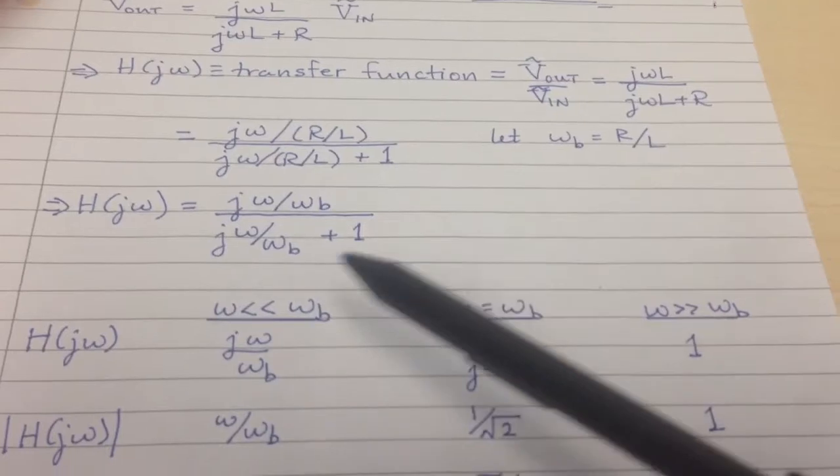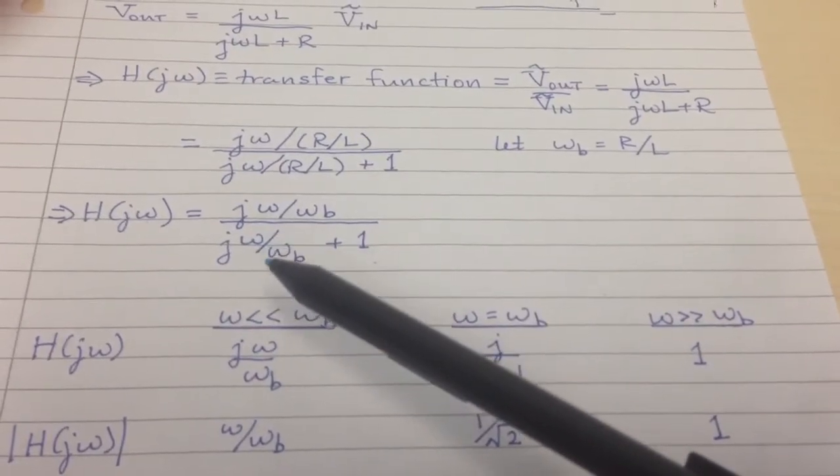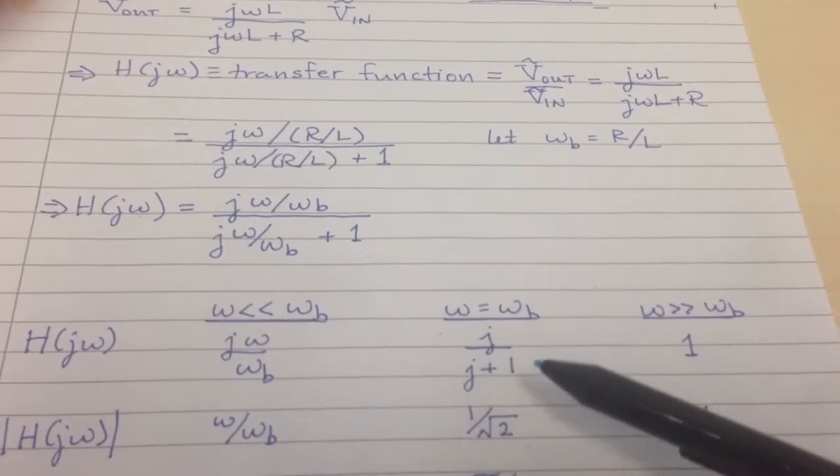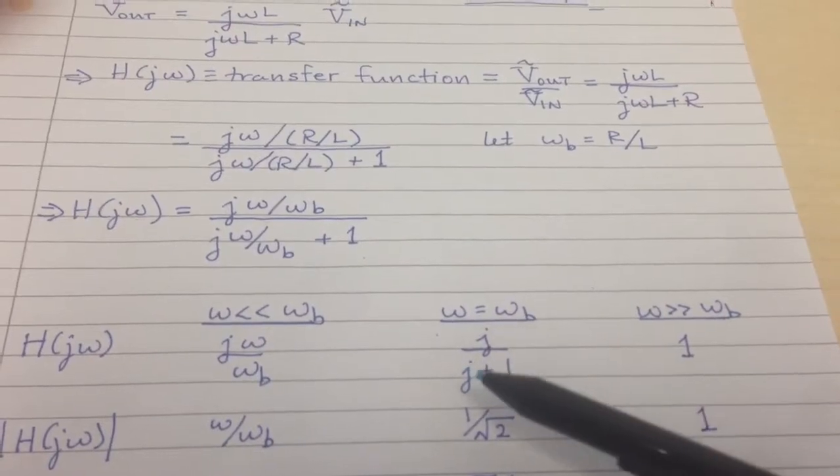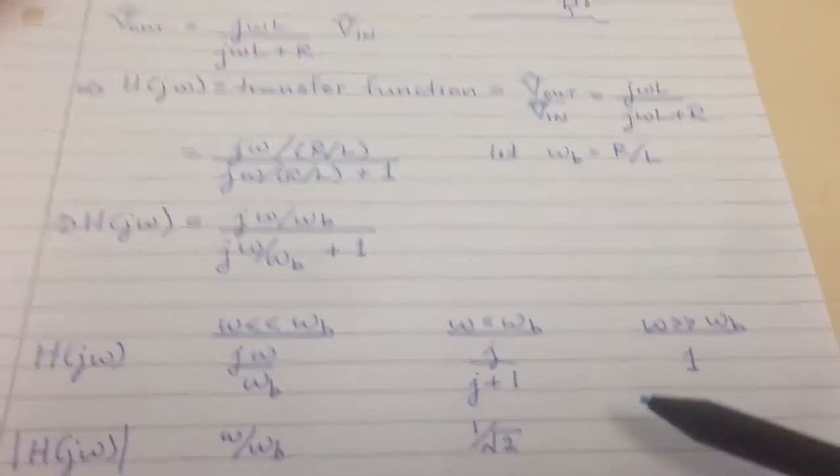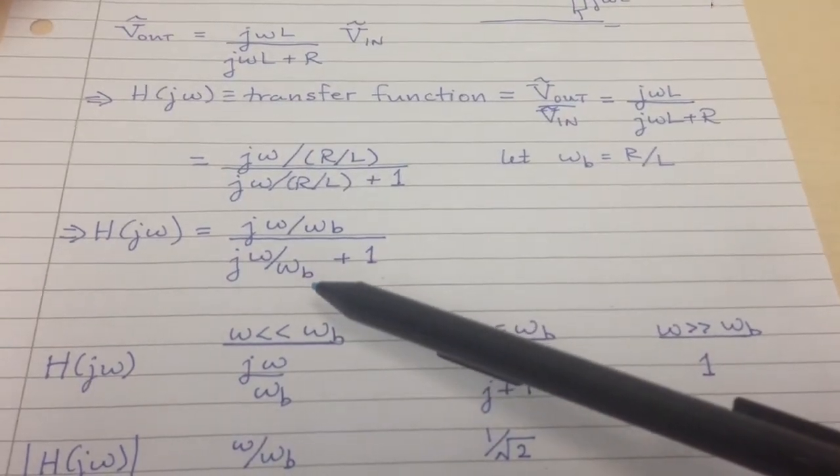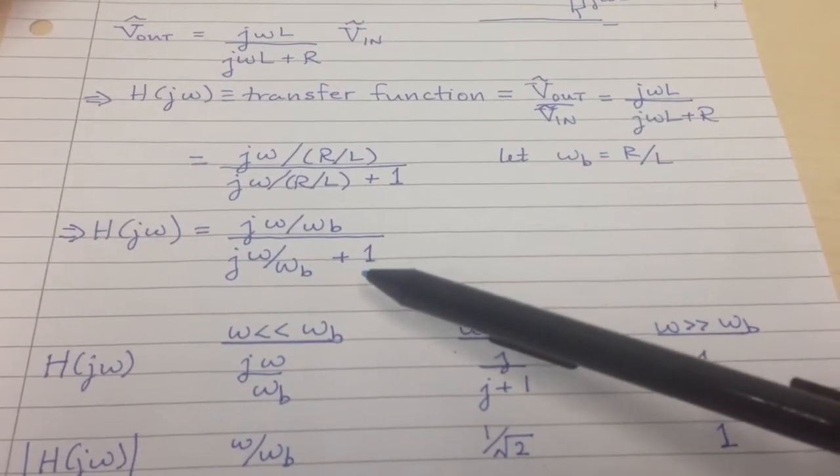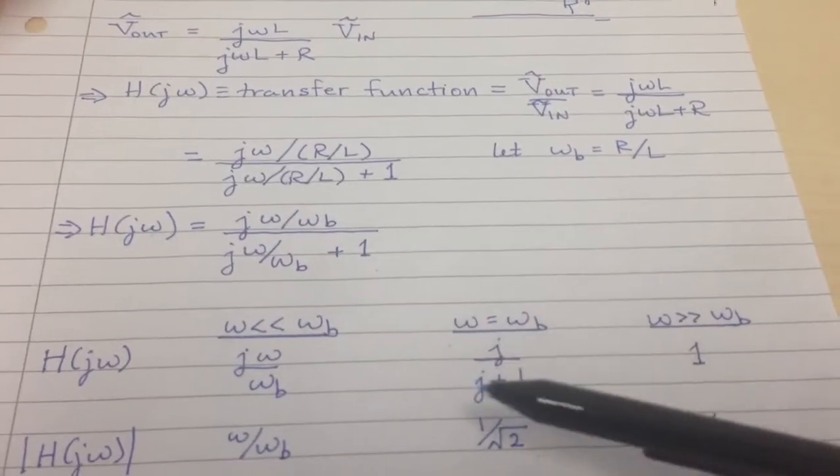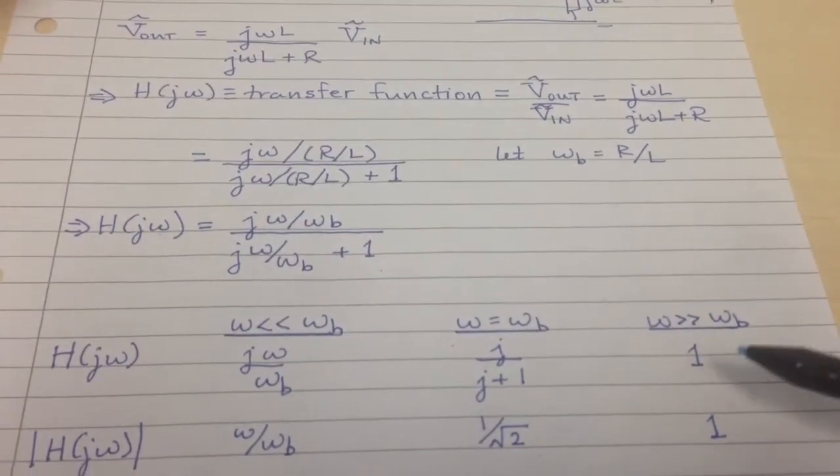When omega equals omega B, this is just j times 1, and it's actually an exact solution j over j plus 1. When omega is much larger than omega B, the j term in the denominator will dominate, the plus 1 isn't going to have much effect, and you end up with something that's approximately 1.